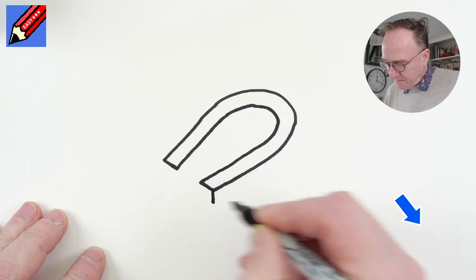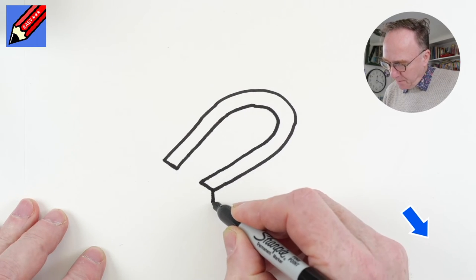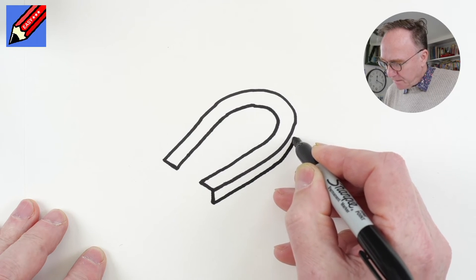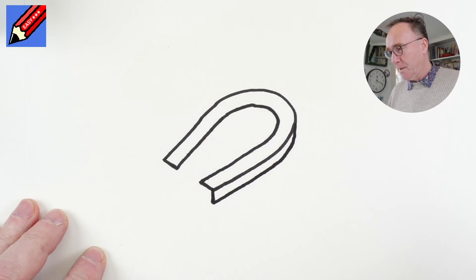Draw the line going straight down and then we want to go straight back like that and then we're going to curve curve curve and up to the top there like that.